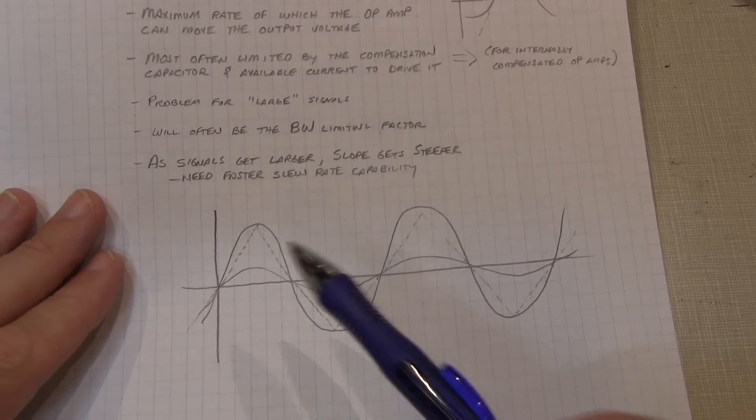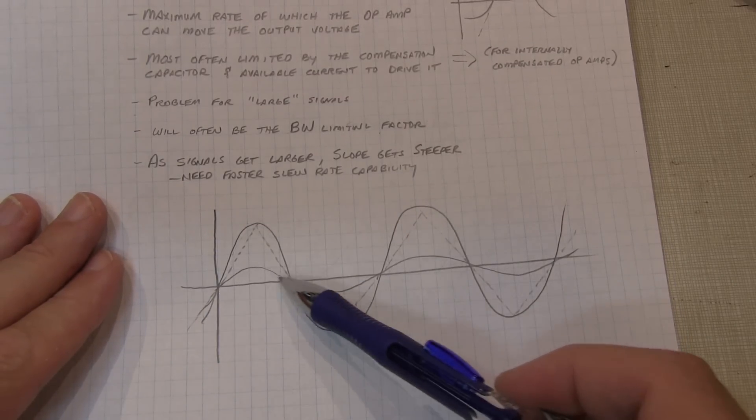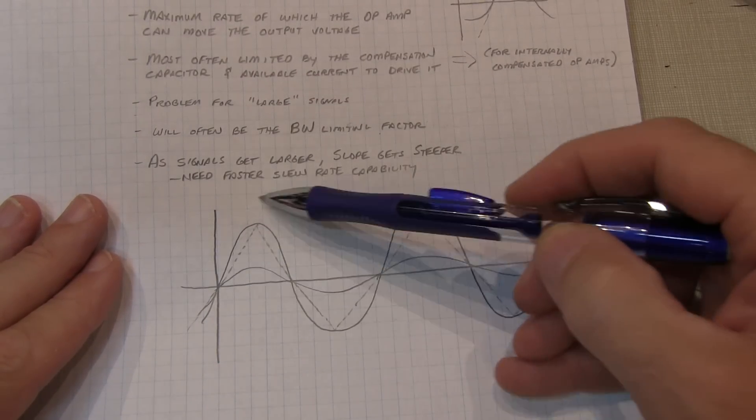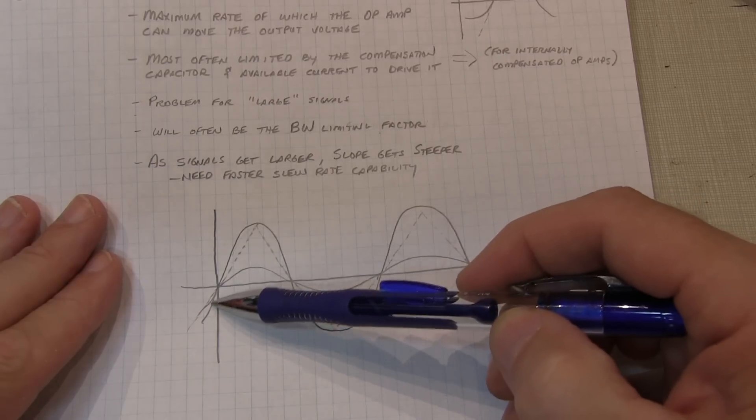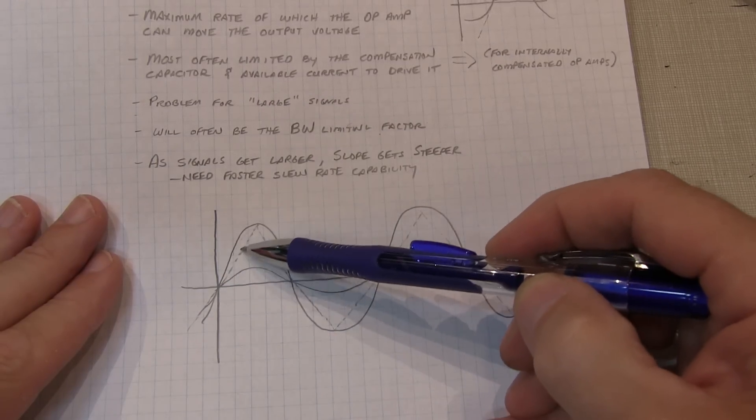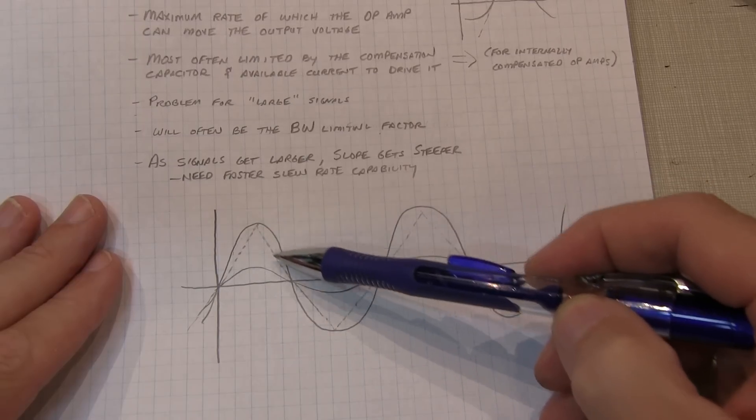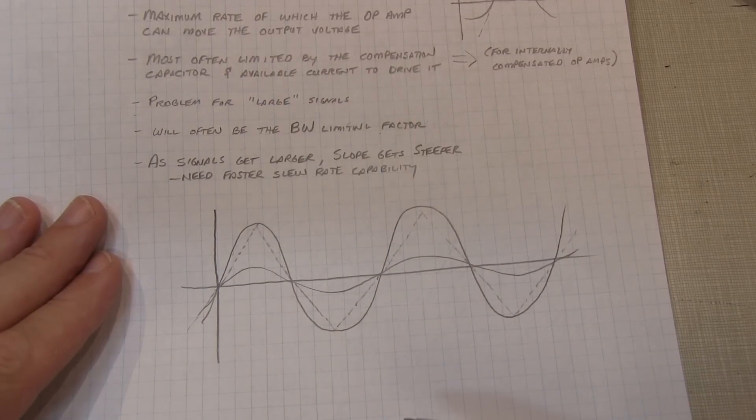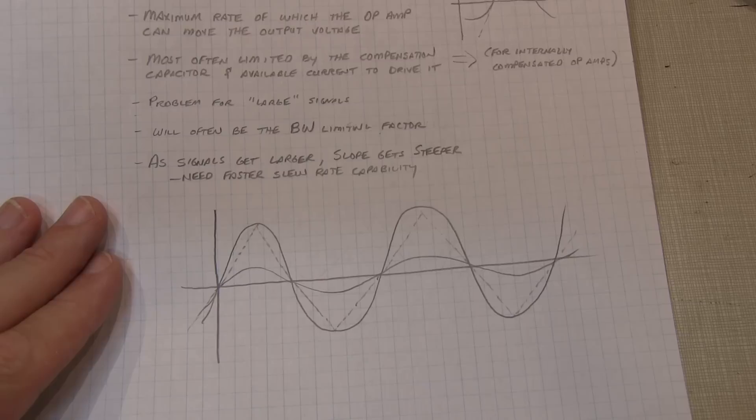So what can happen is for small signals, you've got no problem generating a given frequency. But as that signal gets larger in amplitude, you actually may run into the slew rate limit of the op amp, and therefore distort the waveform, because it can't move the voltage any faster with time. And that's what we saw when we just tried to look at the unity gain bandwidth, or the unity gain response of the op amp.